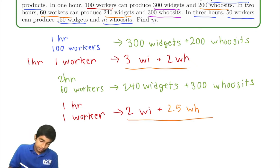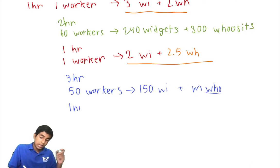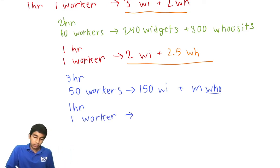In 3 hours, 50 workers can produce 150 widgets and M whoosits. So we're gonna take the exact same strategies we did before. We're gonna look at 1 hour, 1 worker. Breaking it down, 1 hour, 1 worker—it's gonna be 150 times less work. So one widget, and we don't know what M is. That's what we're trying to find. M over 150 whoosits.